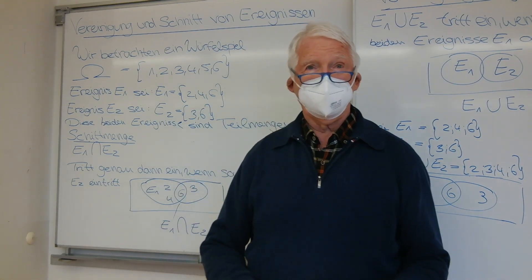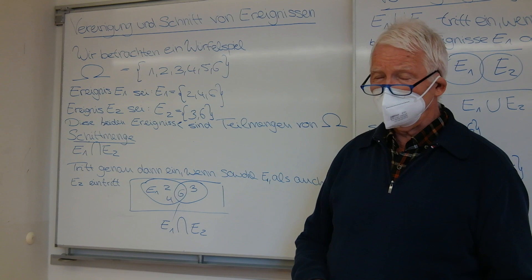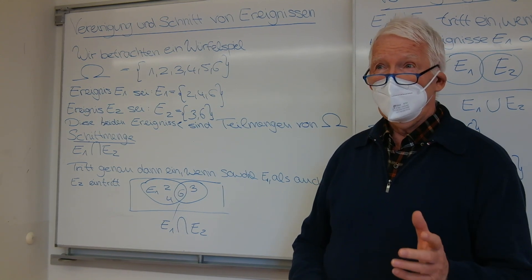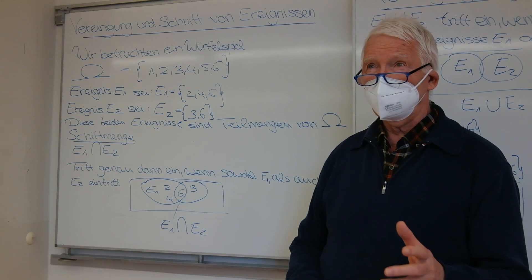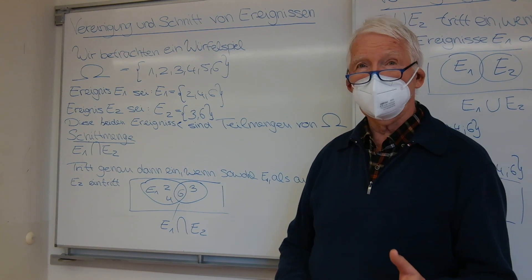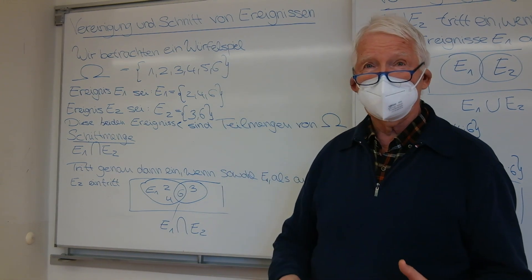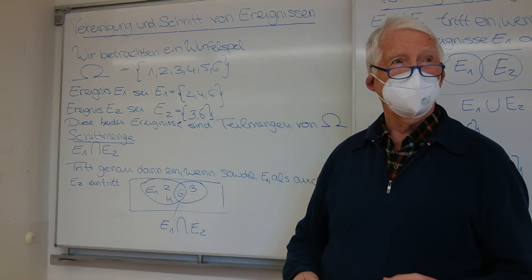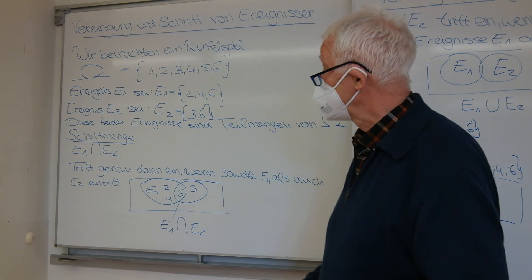Wir sind in der Wahrscheinlichkeitsrechnung und hatten in der letzten Stunde die einzelnen elementaren Dinge betrachtet. Es geht heute noch weiter. Wir betrachten einige Ereignisse, und zwar bei Schnittmengen und bei Vereinigungen.